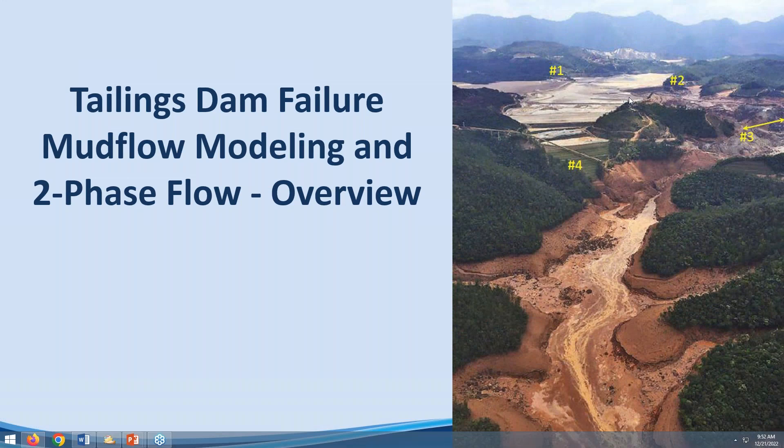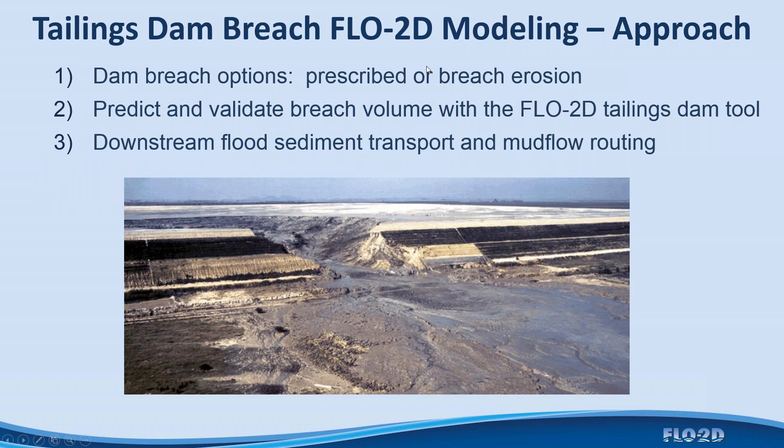This is a brief overview of tailings dam failure and mudflow modeling — downstream flood inundation with two-phase flow for tailings dam failures. The tailings dam approach has a couple of options: you can do a dam breach with either prescribed or breach erosion, predict and validate the breach volume using a tailings dam tool created in Flow2D, then route the hydrograph downstream and simulate sediment transport and mudflow routing. The primary focus is to estimate the volume of tailings released through the breach and predict the area of inundation downstream.